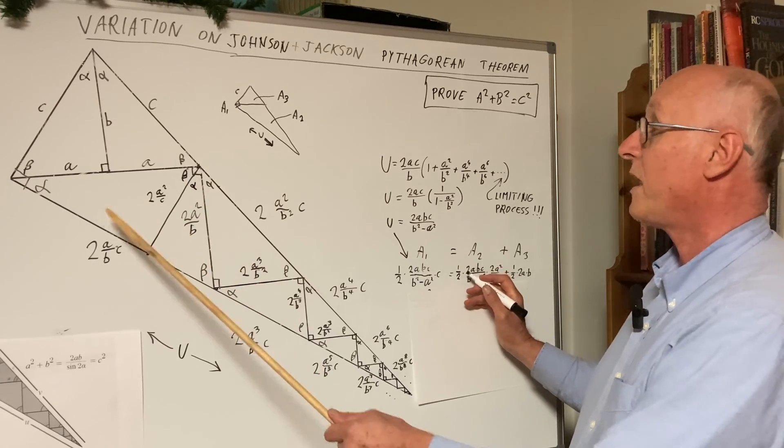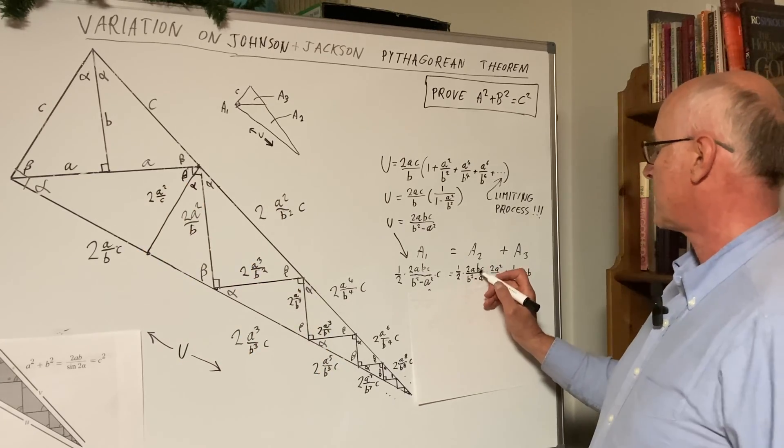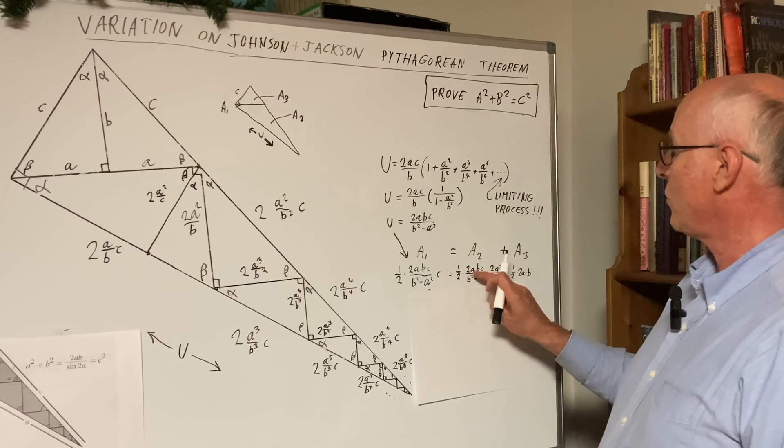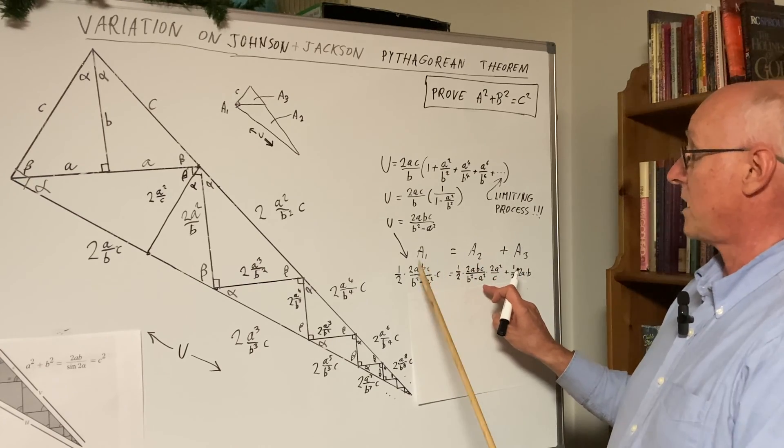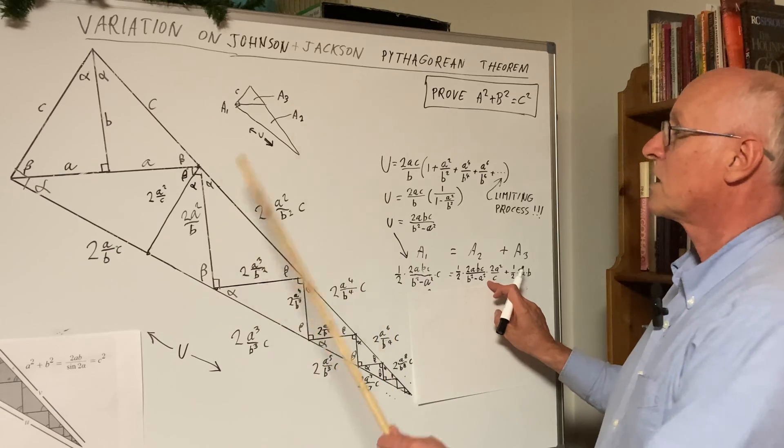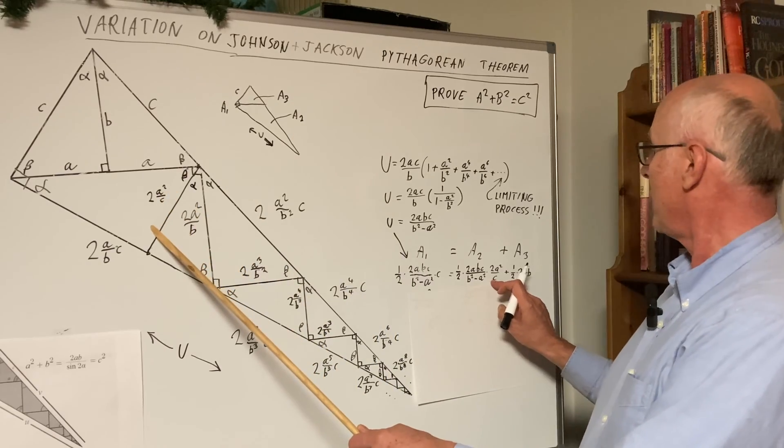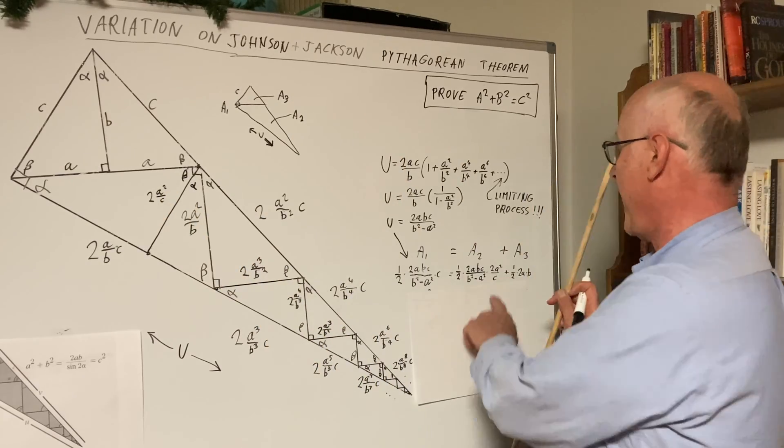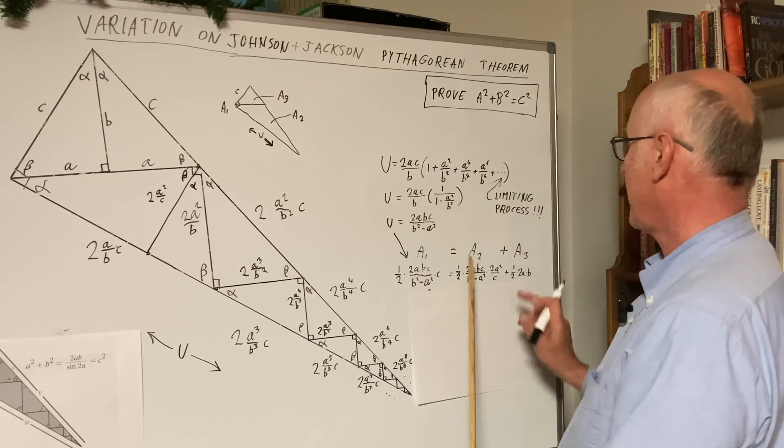And now we get a2, which is 1 half. Again, it's this factor u, which is right here, same as here, times 2a squared over c. That's our height. Okay, we got a2.